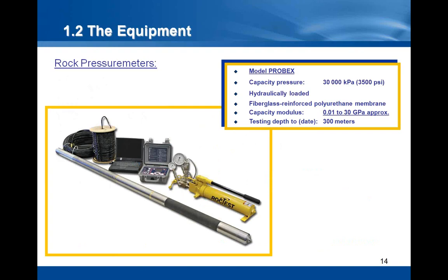On this slide, you can see a special pressure meter designed for use in rock. The model Probex has a capacity of 30,000 kPa. It is hydraulically loaded and is fitted with a probe equipped with a fiberglass reinforced polyurethane membrane. This very tough membrane allows the use of the Probex in rock. The maximum modulus that can be obtained with this pressure meter is 30 GPa, which allows its use in moderately hard rock.